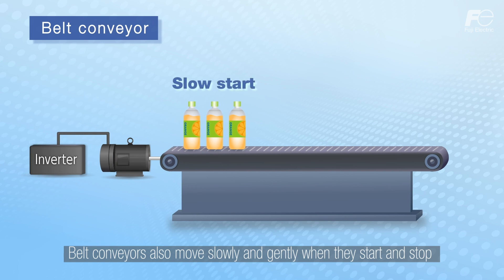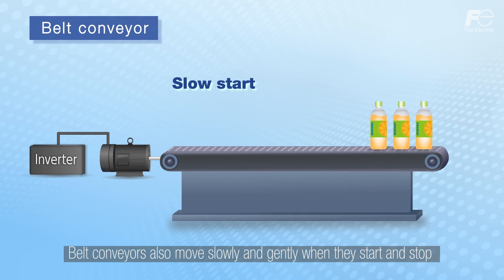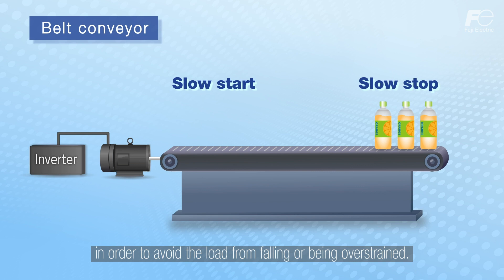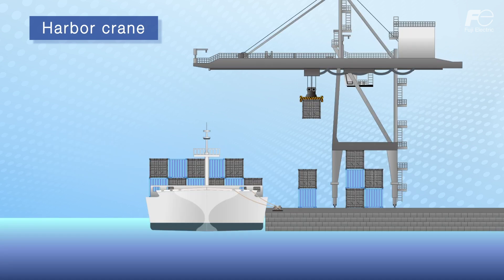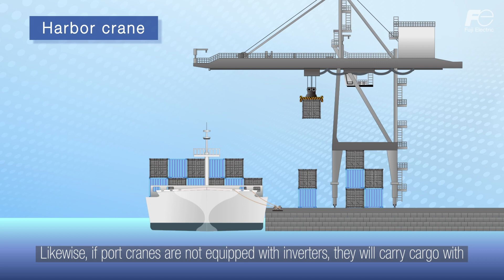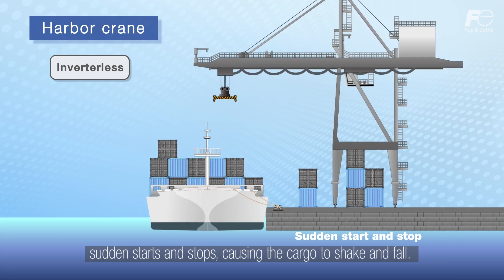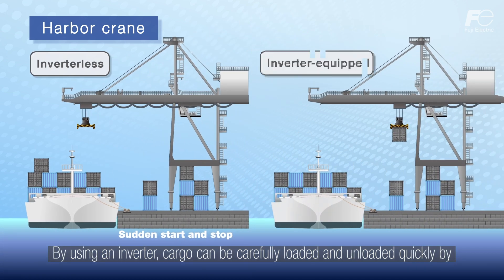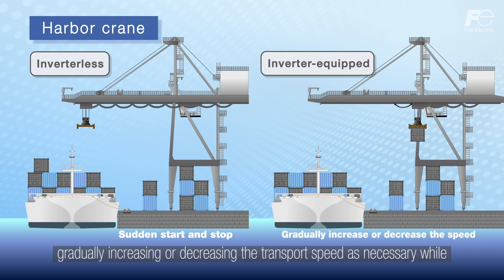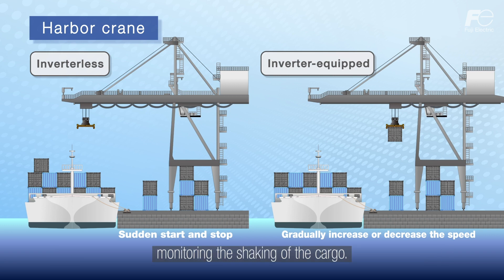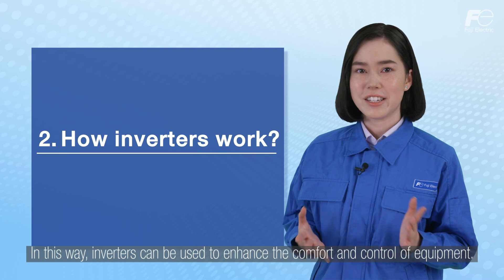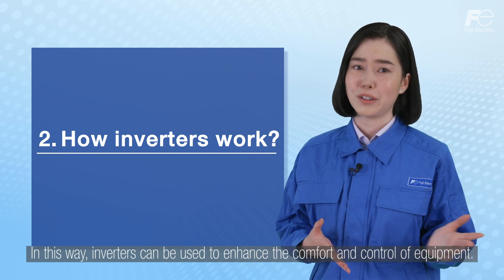Belt conveyors also move slowly and gently when they start and stop in order to avoid the load from falling or being overstrained. Likewise, if port cranes are not equipped with inverters, they will carry cargo with sudden starts and stops, causing the cargo to shake and fall. By using an inverter, cargo can be carefully loaded and unloaded quickly by gradually increasing or decreasing the transport speed while monitoring the shaking of the cargo. In this way inverters can be used to enhance the comfort and control of equipment.